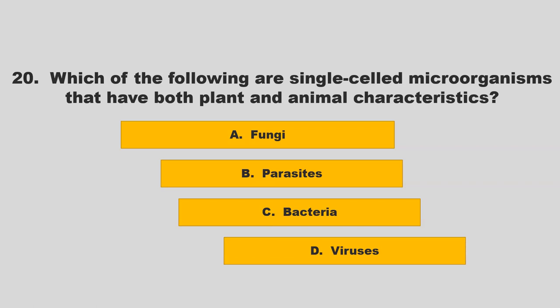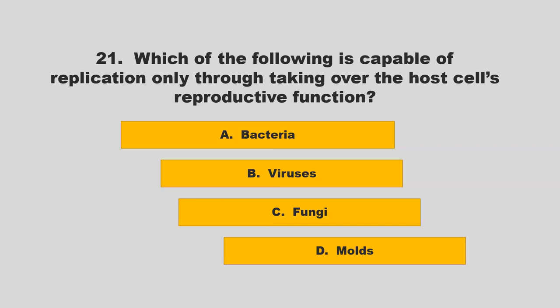Which of the following are single-celled microorganisms that have both plant and animal characteristics? Options: fungi, parasites, bacteria, or viruses. The correct answer is C: bacteria.